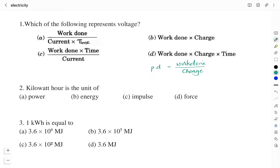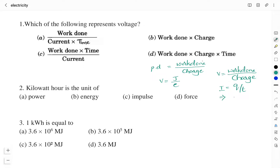Potential difference is the work done in moving one coulomb of charge from one point to the other point in a circuit. So voltage is joule upon coulomb — that is the unit. Voltage is work done divided by charge. By the definition of electric current, current is the rate of flow of charges, so current equals charge upon time, which means Q equals I times T.